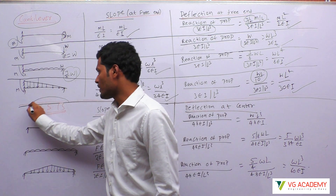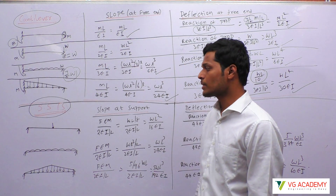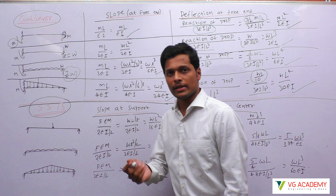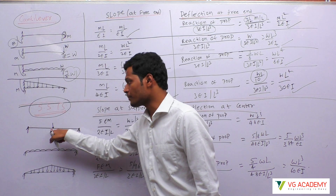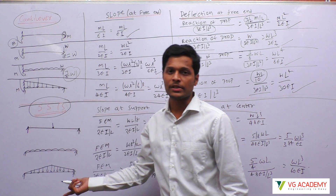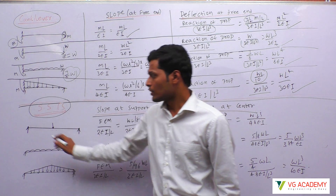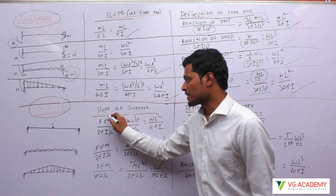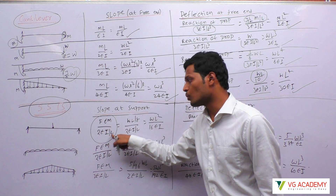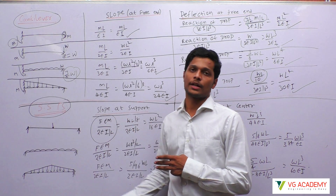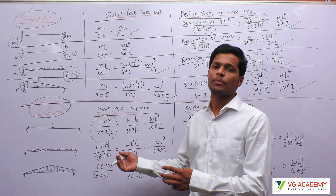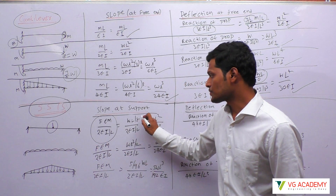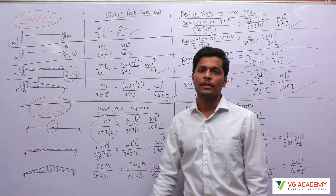Now we will see how to find slope and deflection of a simply supported beam. In a simply supported beam, slope at the center will be zero due to symmetry, so it is generally not asked. Slope at the support and deflection at the center are most commonly asked. The standard formula for slope at the support is: fixed end moment divided by 2EI by L. Since we already know fixed end moments from structural analysis, just substitute and divide.